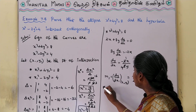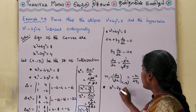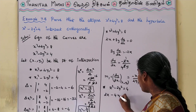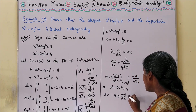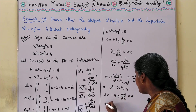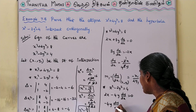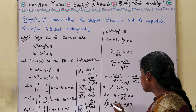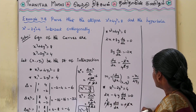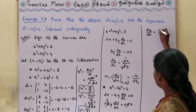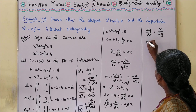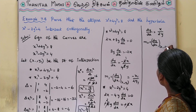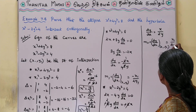For the next curve: x² - 2y² = 4. Differentiating: 2x - 4y(dy/dx) = 0, so 2x = 4y(dy/dx), giving dy/dx = 2x / 4y = x / 2y. Therefore m2 = dy/dx at (x1, y1) is equal to x1 / 2y1.